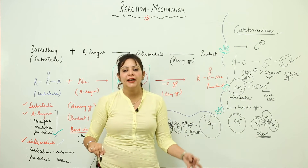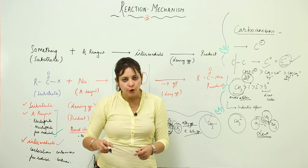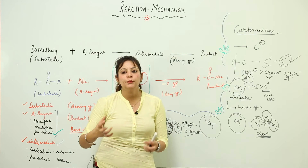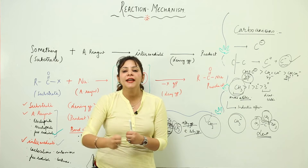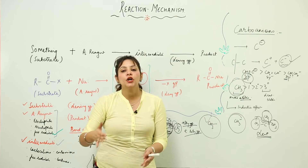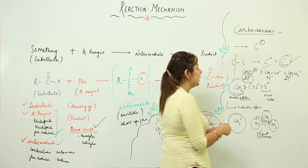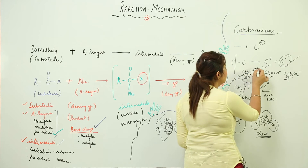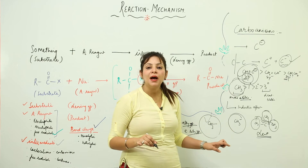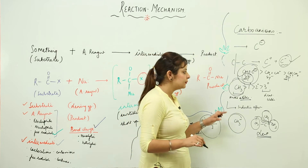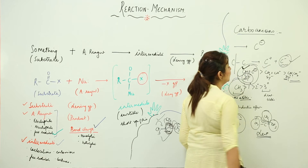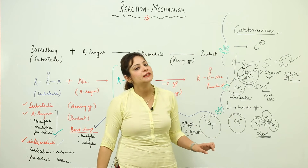We know that s-orbitals are present closer to the nucleus, so electrons in them are pulled with a greater force. The carbon with more s-character will pull the negative charge more towards the nucleus, and the negative charge will somehow get neutralized because the nucleus is positively charged — that is why it corresponds to more stability. So the sp carbanion from alkynes has maximum s-character, its negative charge is dispersed and stabilized, while the carbanion from alkanes with sp3 hybridization is the least stable.